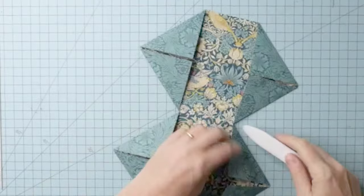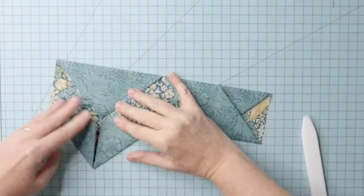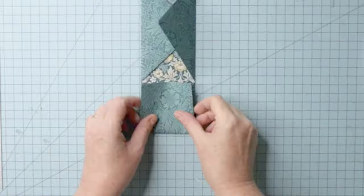Fold down the top flaps. Fold up the lower flaps. And fold again into your four panel accordion.